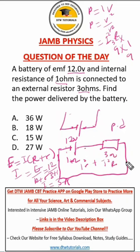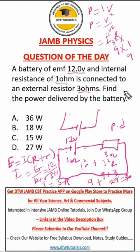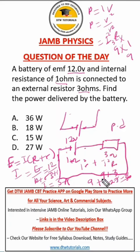And for I²R, that would be 9 times 3, which is 27. So we have 27 plus 9, and that gives us 36. Be careful — I know most people will just find the current and then calculate only the power for the external resistor, forgetting that the battery also delivers power to the cell itself. As I said, current is delivered to the cell, that's the source, and also to the external circuit, which is this resistor. So you have to add them up. This will be the total power delivered by the battery, which is 36 watts.